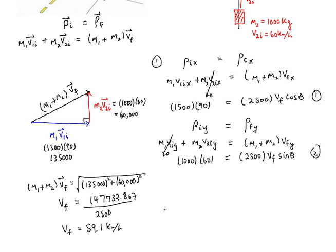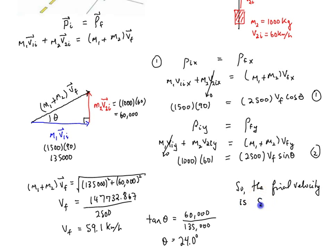And then, how do you get the angle? Well, you want this angle theta, so we can use tan of theta equals opposite, which is this side, that's 60,000, divided by the adjacent, which is 135,000, and that will get you 24.0 degrees. So, the final velocity is 59.1 kilometers per hour in the direction 24 degrees north of east.